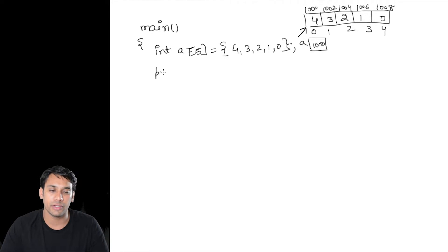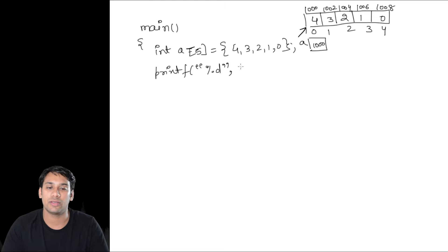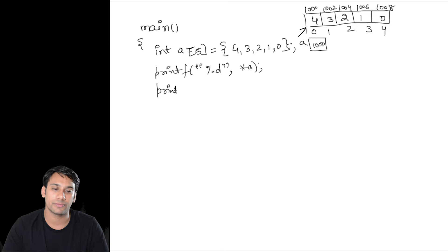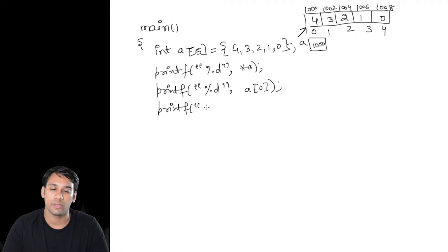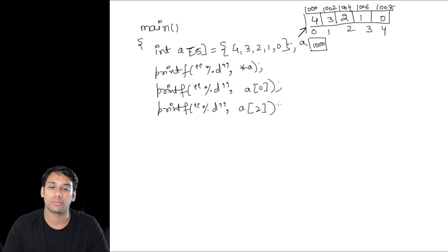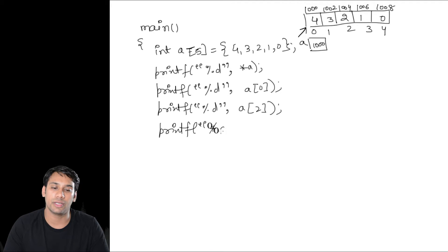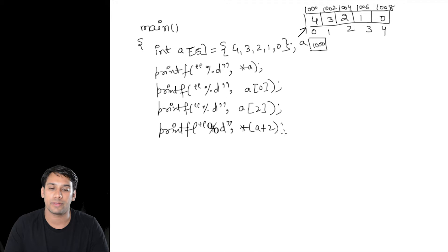Now if I print: printf("%d", *a). In the next line I am printing printf("%d", a[0]). In the next line I am printing printf("%d", a[2]). In the next line I am printing printf("%d", *(a + 2)).